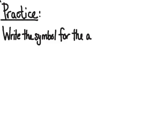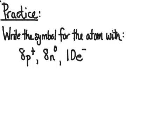Let's do some practice. Let's write the symbol for the atom with a given composition of subatomic particles. Take a look at what the symbol might look like if I had 8 protons, 8 neutrons, and 10 electrons. If you'd like, pause the video right now and work on that, and then in a second I'm going to reveal the answer.